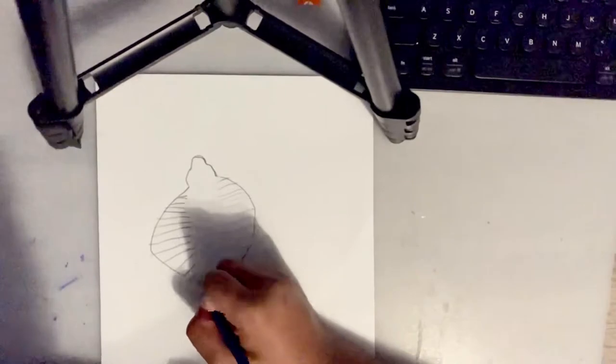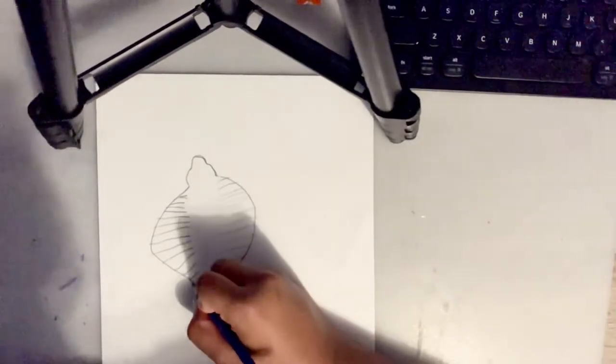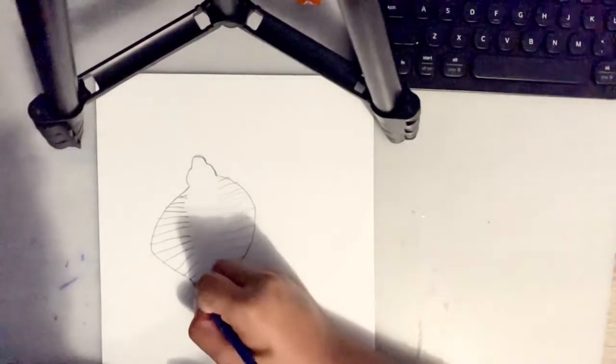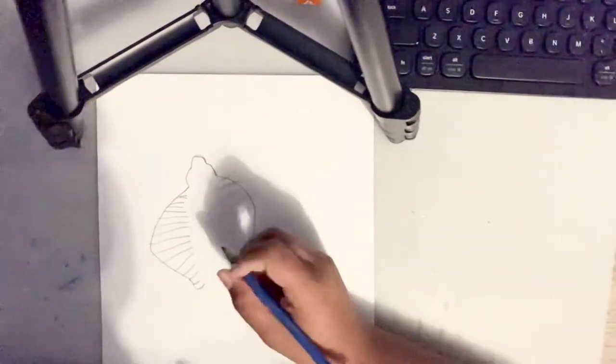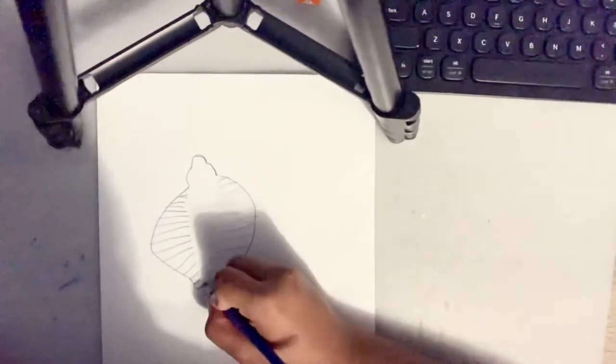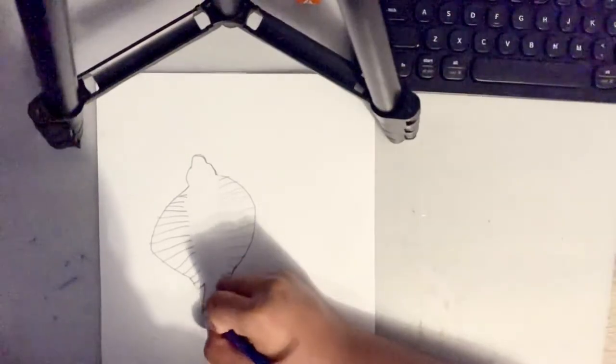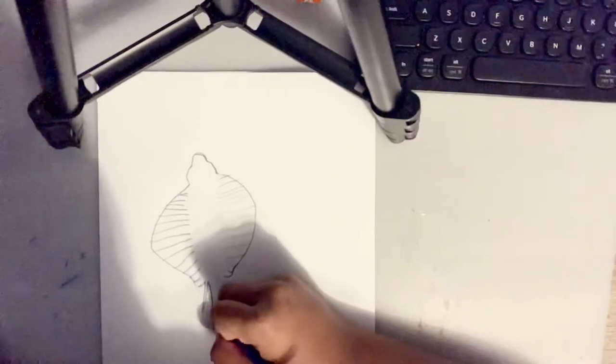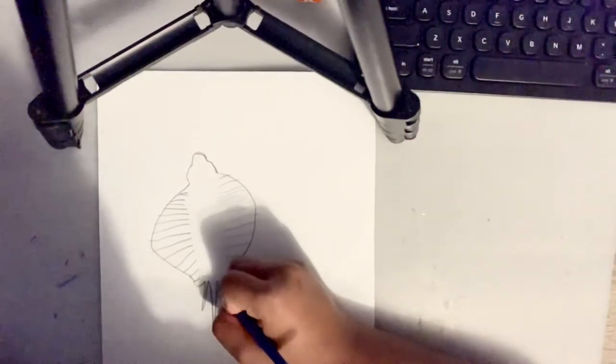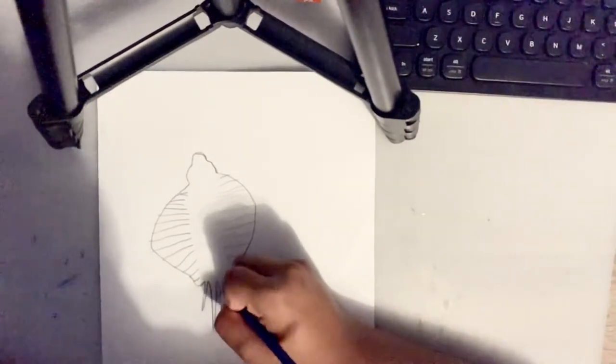Go out a little from here and make two bumps. Then make the manta ray's tail like that.